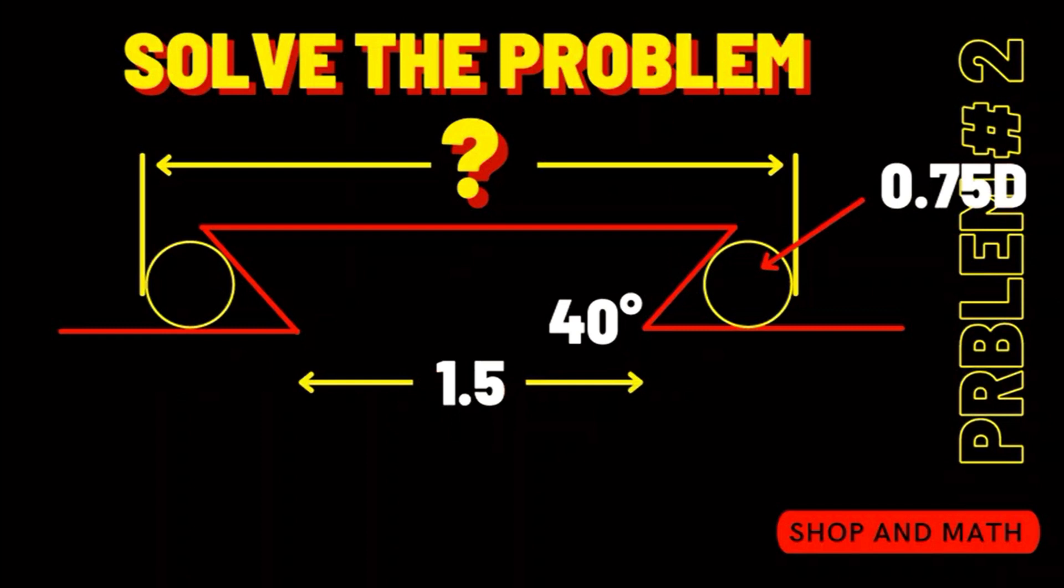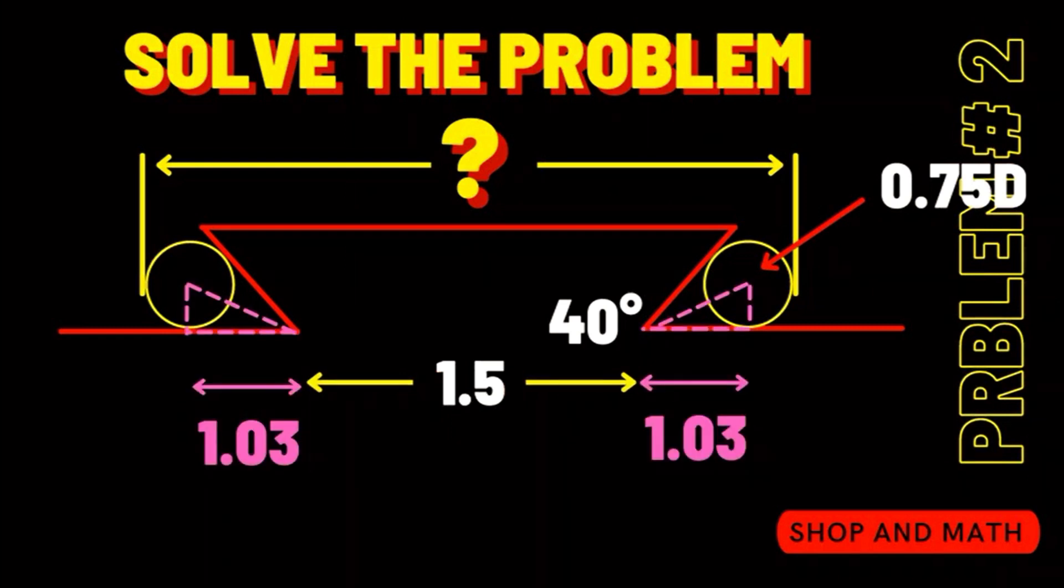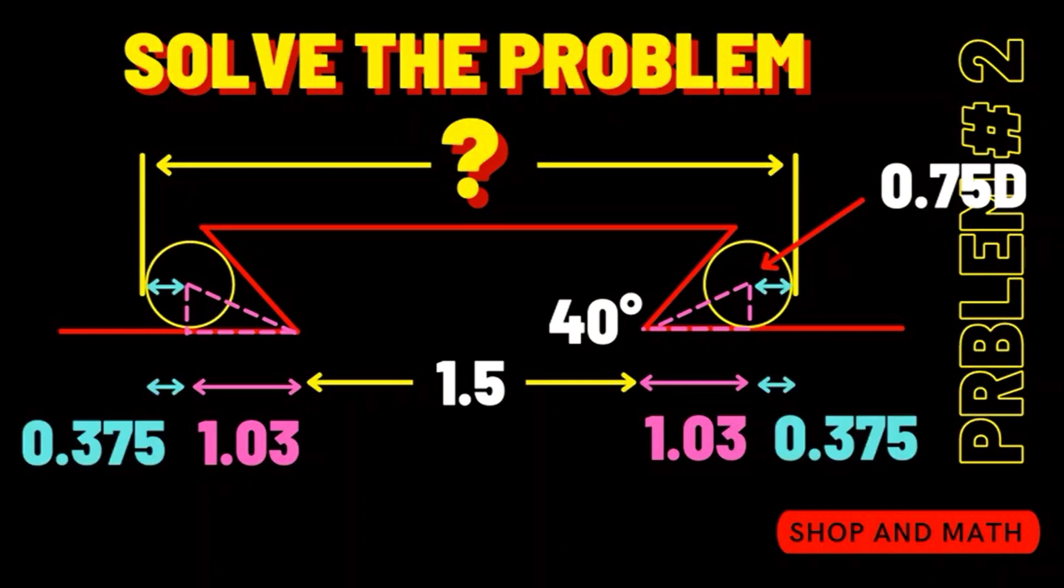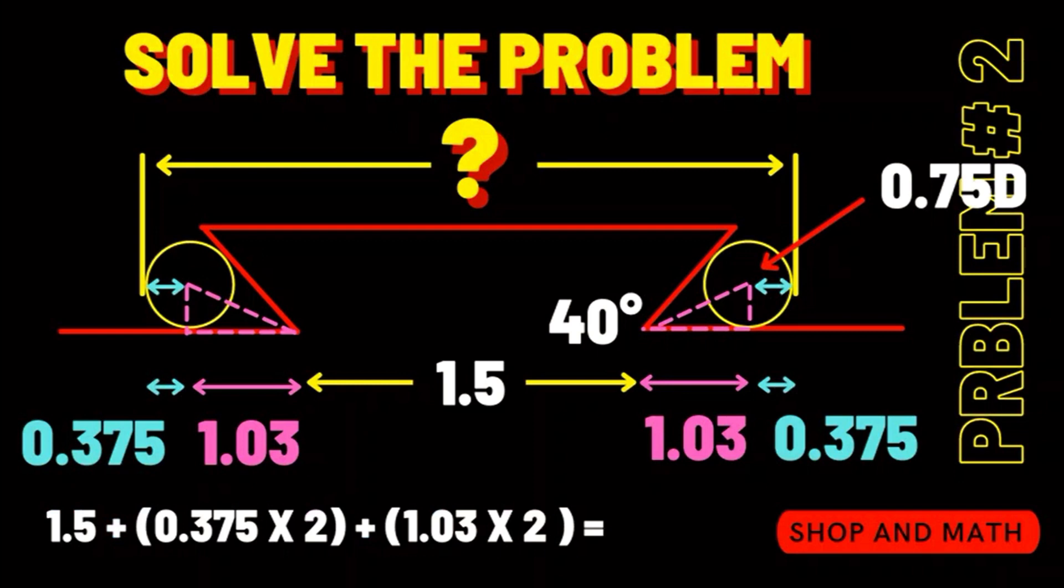Therefore we're going to solve our problem now. We know that our triangle length is 1.03. Add our radiuses to that. Add them all up and we come up with 4.31.